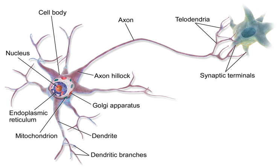Neurons vary in shape and size and can be classified by their morphology and function. The anatomist Camillo Golgi grouped neurons into two types: type 1 with long axons used to move signals over long distances, and type 2 with short axons, which can often be confused with dendrites. Type 1 cells can be further classified by the location of the soma. The basic morphology of type 1 neurons, represented by spinal motor neurons, consists of a cell body called the soma and a long thin axon covered by a myelin sheath. The dendritic tree wraps around the cell body and receives signals from other neurons. The end of the axon has branching terminals that release neurotransmitters into a gap called the synaptic cleft between the terminals and the dendrites of the next neuron.